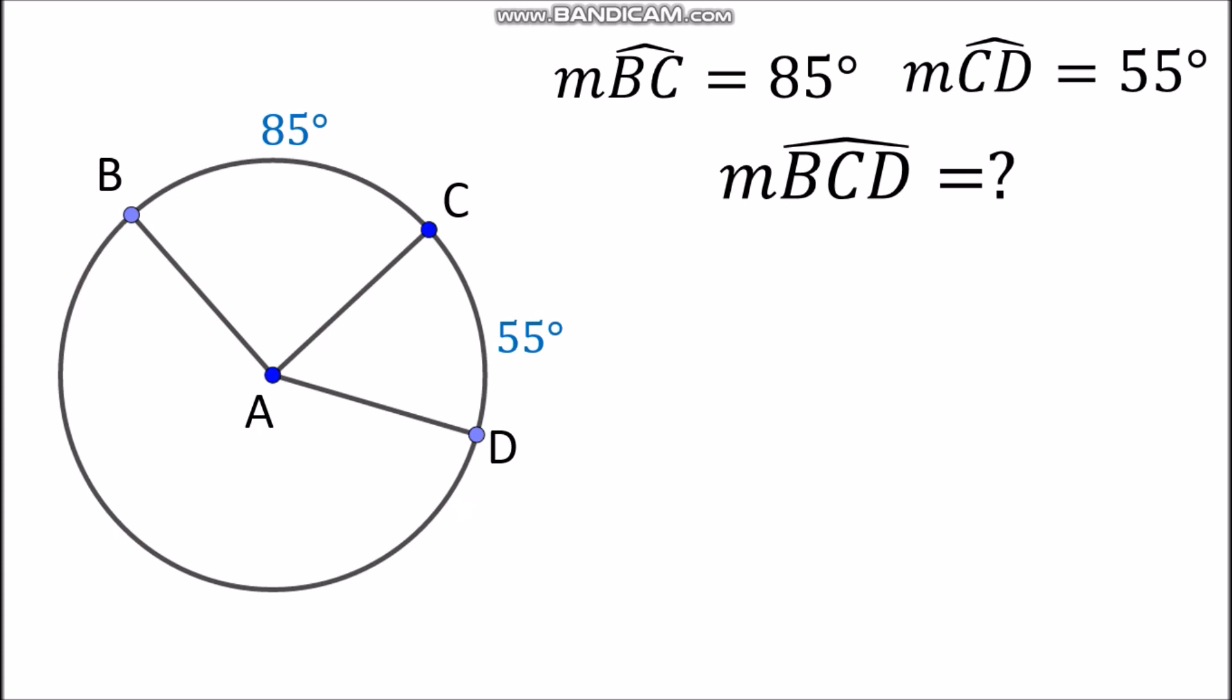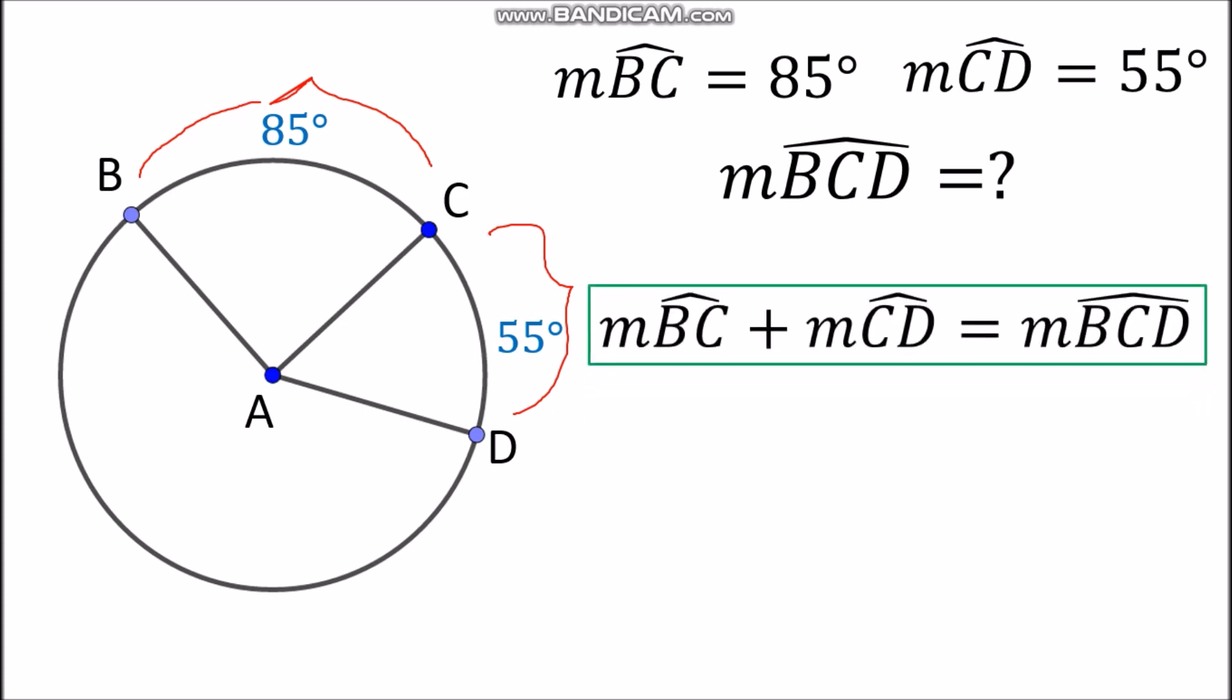If you will notice, arc BCD is made up of two minor arcs which are arc BC and arc CD. Therefore, we can apply postulate number 23, which is the arc addition postulate.